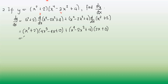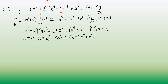So we have the quantity x squared plus 2, times 4x cubed minus 4x, plus the quantity x raised to 4 minus 2x squared plus 4, times 2x. Now we're going to multiply and then combine similar terms after multiplying.